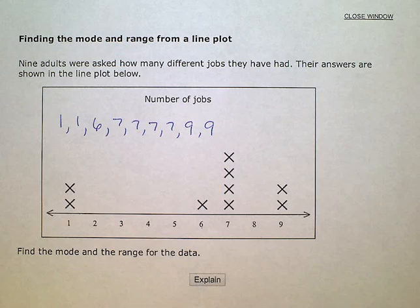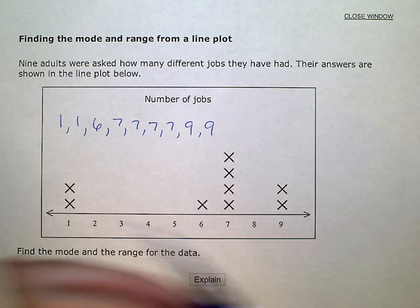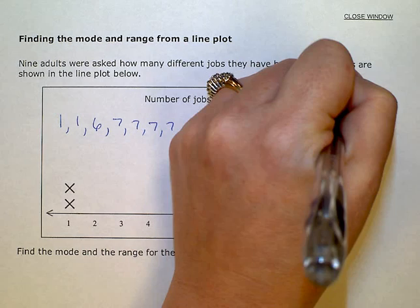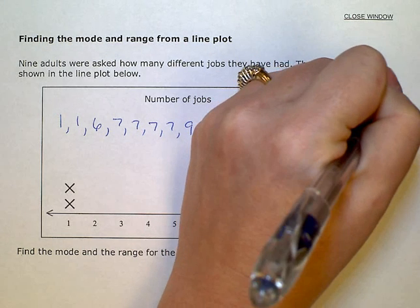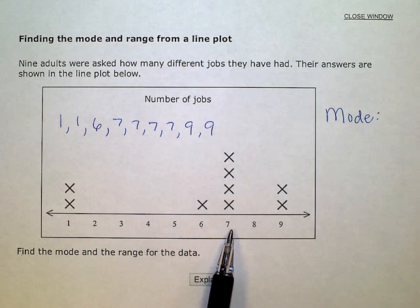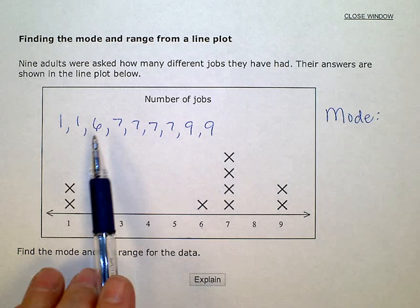So, there's my nine responses. I need the mode, which is the number that occurs most often. So, my mode — the number that occurs most often, or the answer that was given the most frequently — is seven. I can see I have four of those.